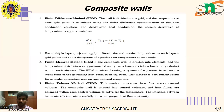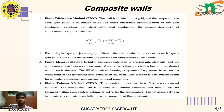In the finite volume method, the composite wall is divided into control volumes and heat fluxes are balanced within each control volume to solve for the temperature. The interface between two materials is treated carefully to ensure proper heat flux continuity.